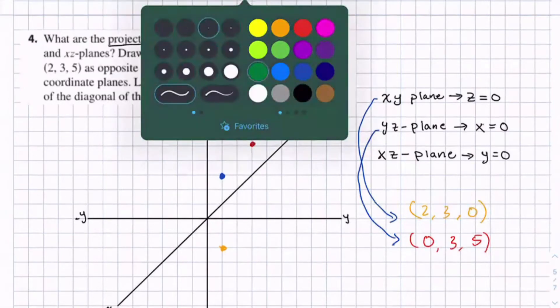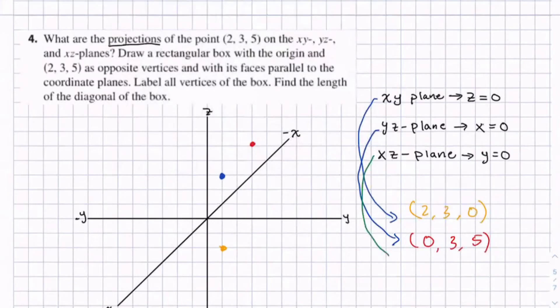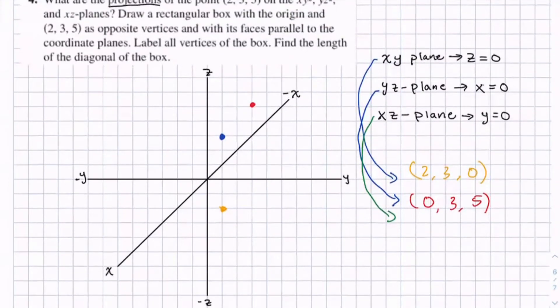Alright so for the final point, projection on the xz plane. So this happens when y equals 0: 2, 0, 5.